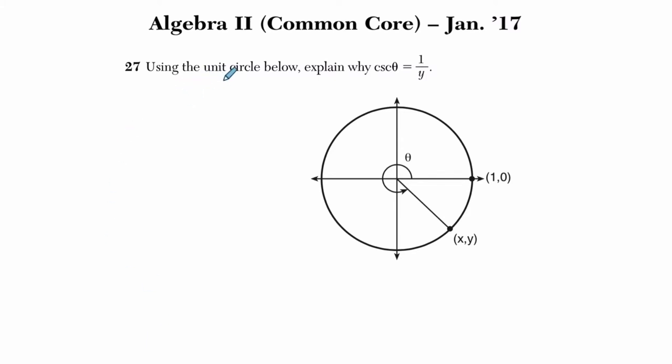Okay, so they say, using the unit circle below, explain why the cosecant of theta equals 1 over y.